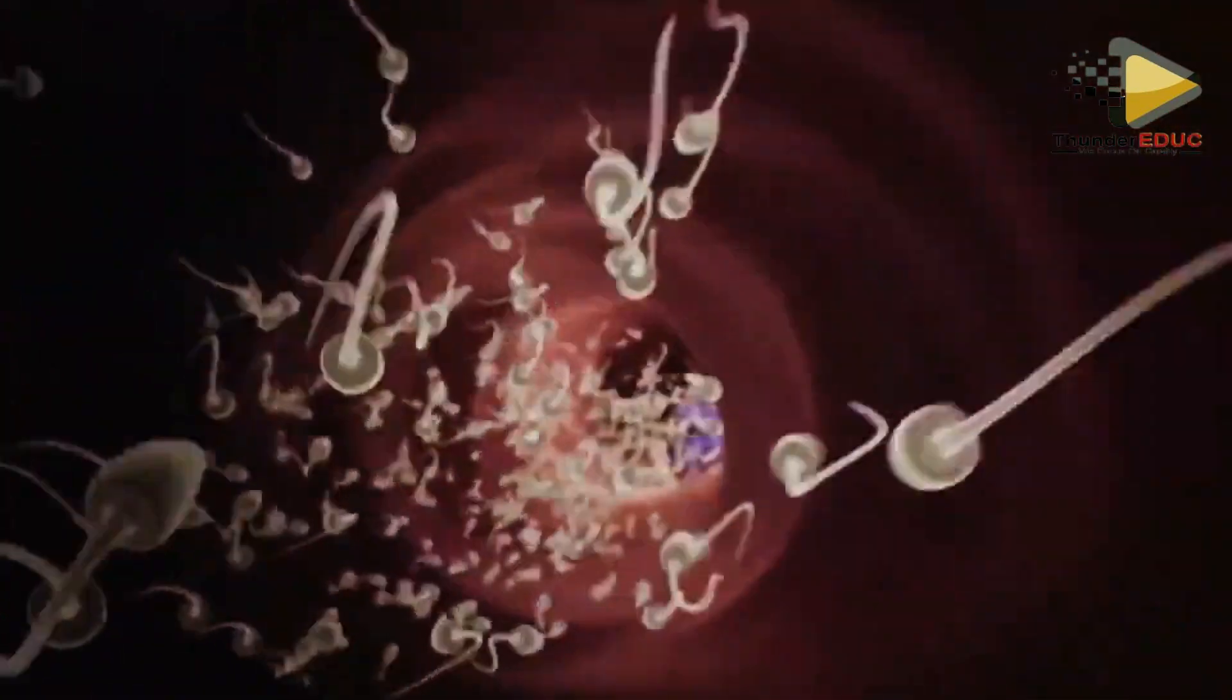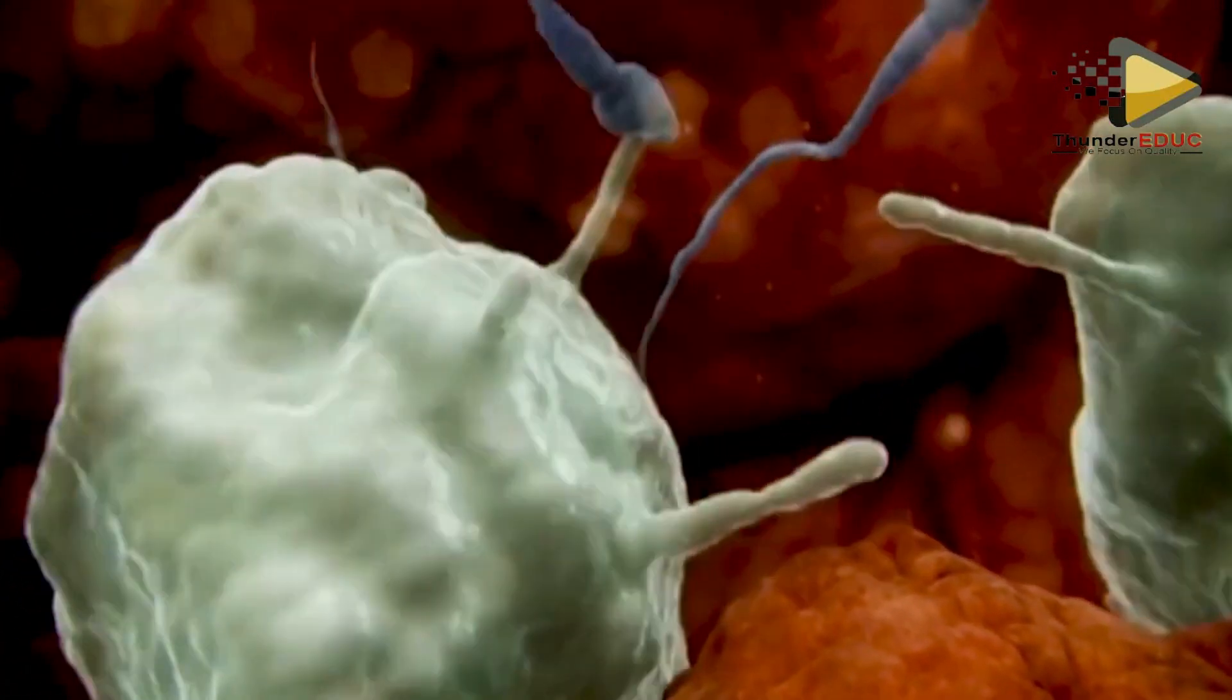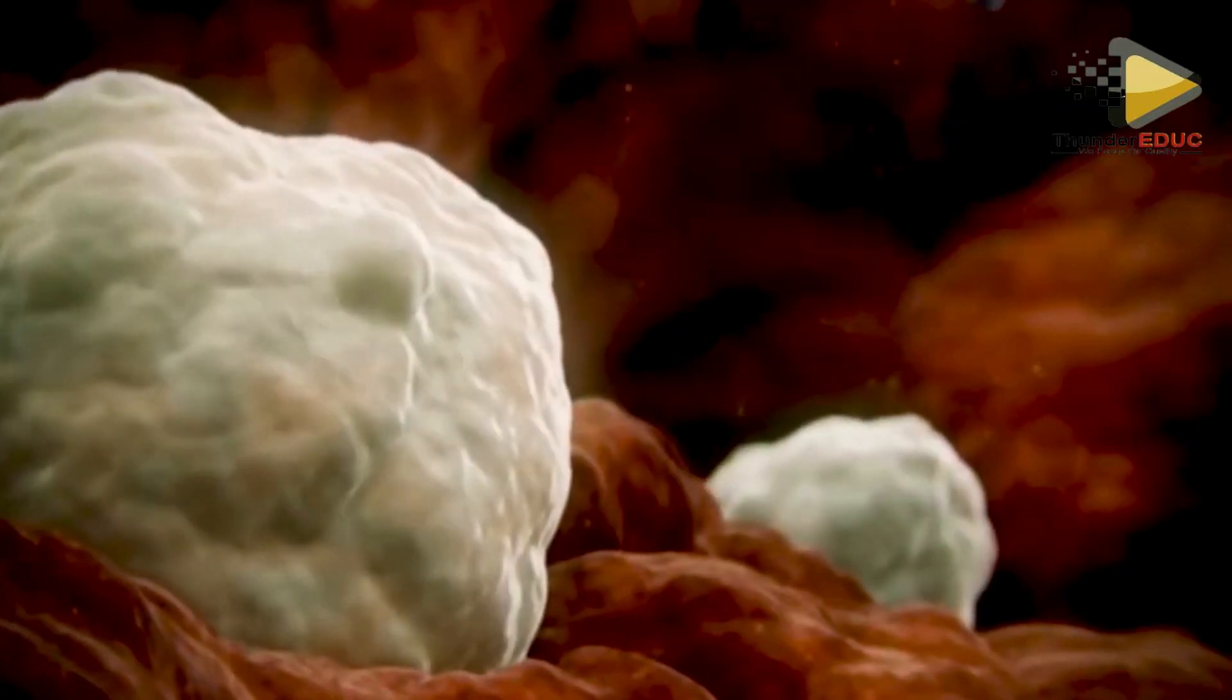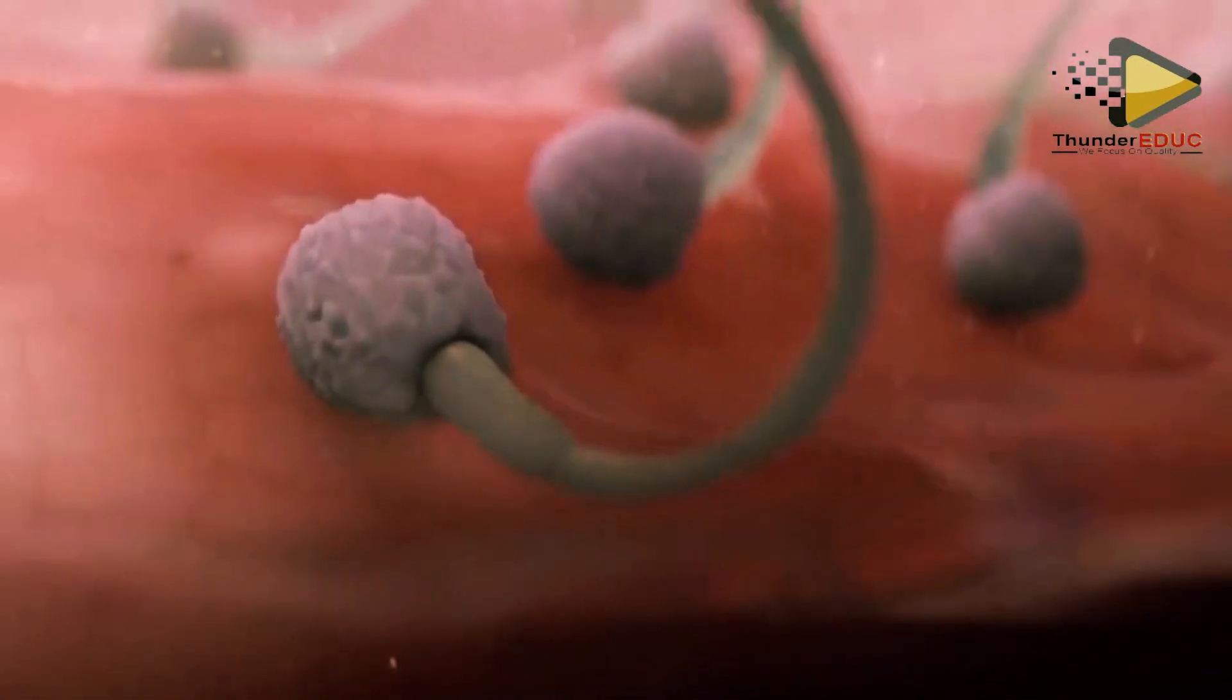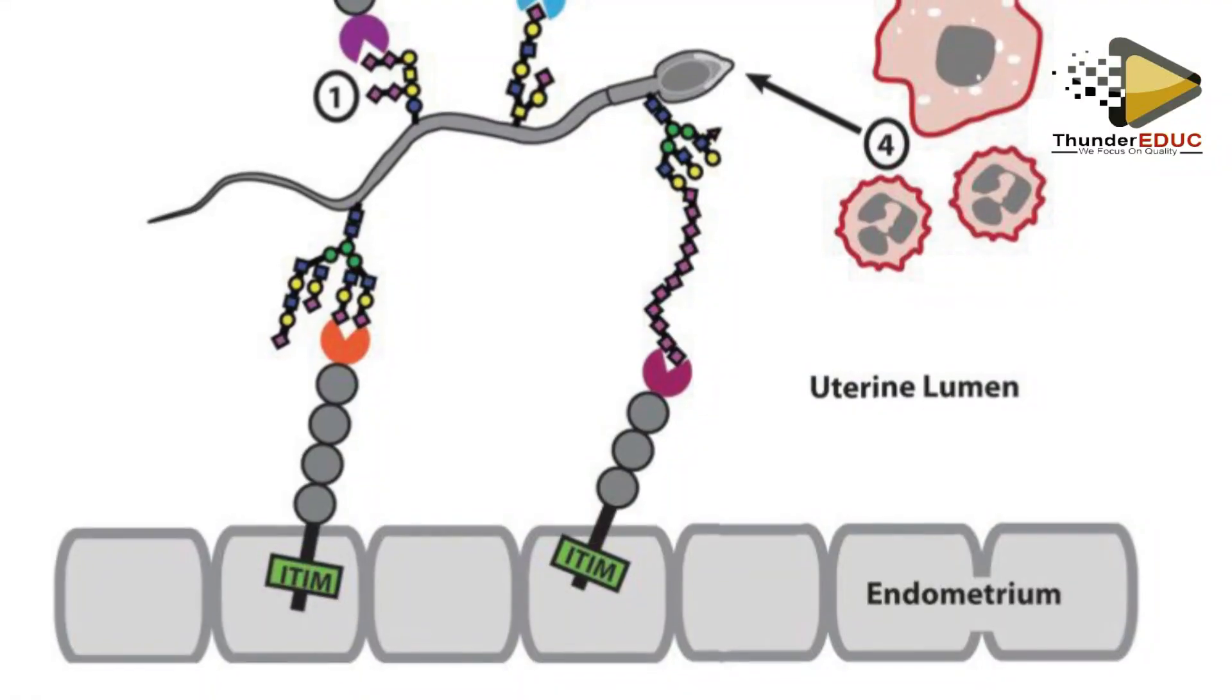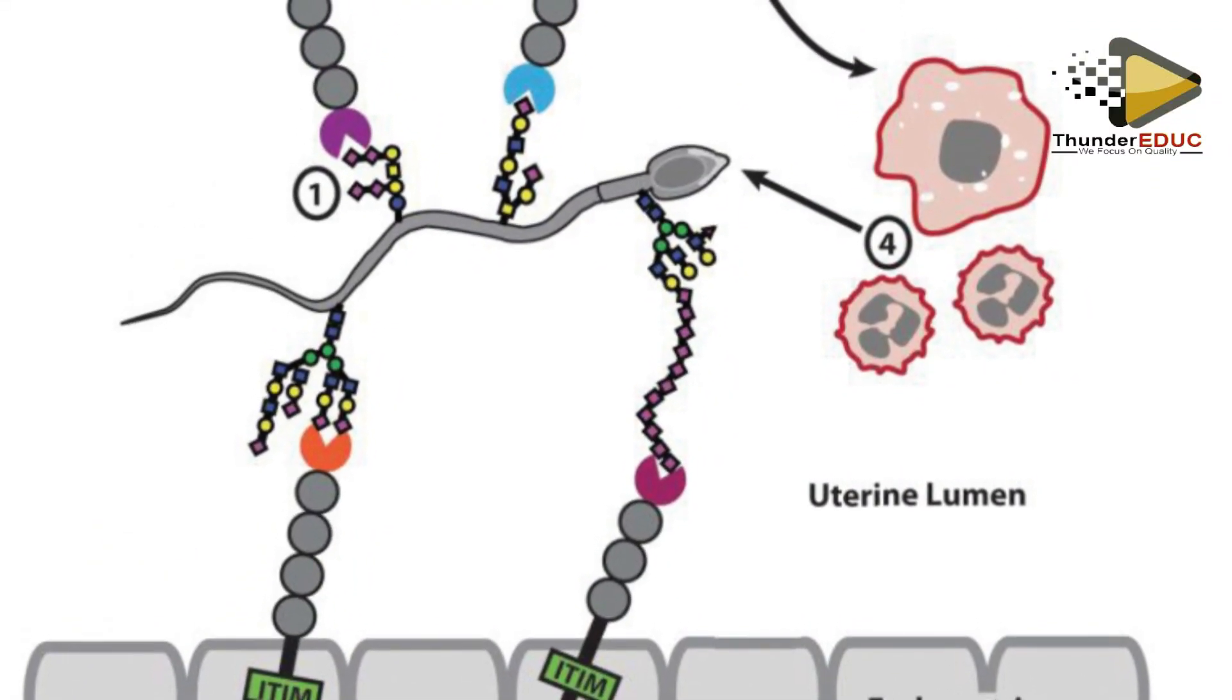Fertilization occurs in the fallopian tube. However, the immune system of the female identifies sperm as foreign particles and kills them.